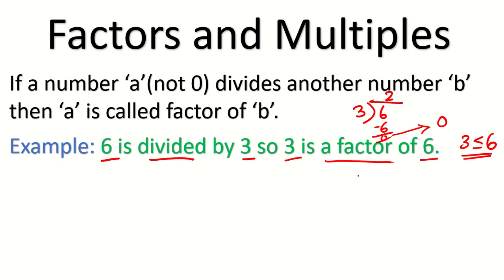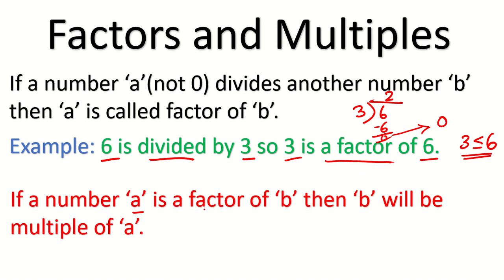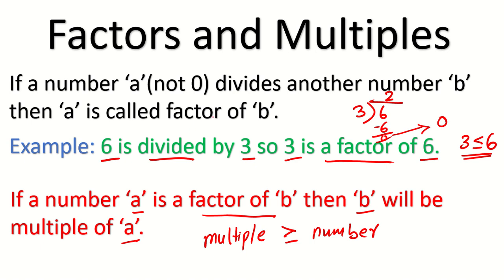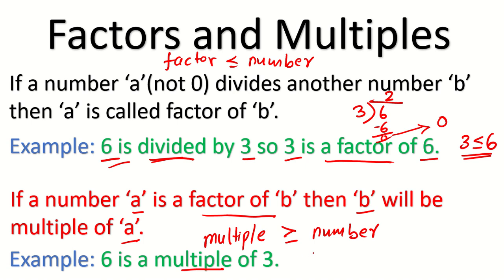There is a very minute difference between factors and multiples. If I say A is a factor of B, it means B will be the multiple of A. So multiple of a number will be bigger than or equal to the number, whereas factor was smaller than or equal to the number. For example, I said 3 is a factor of 6, so in terms of multiples: 6 is a multiple of 3. You can see 6 is bigger than or equal to 3.